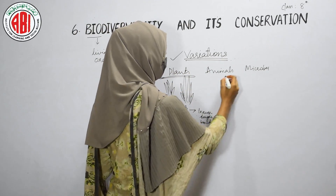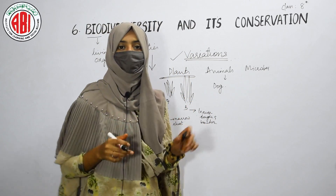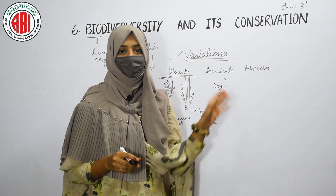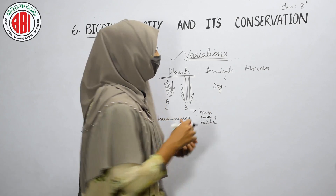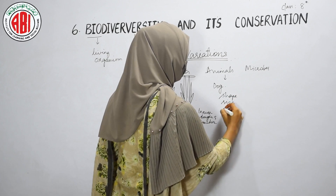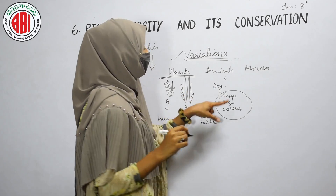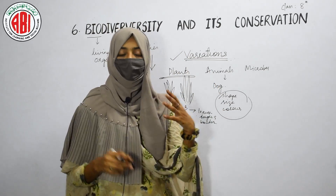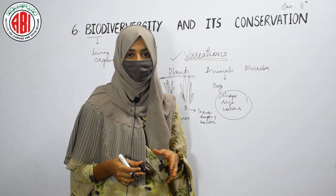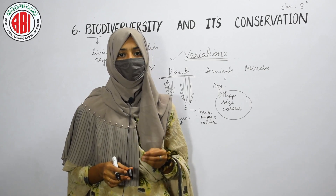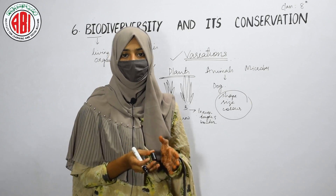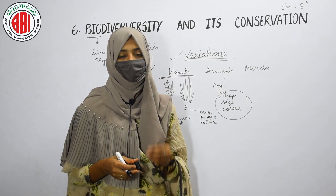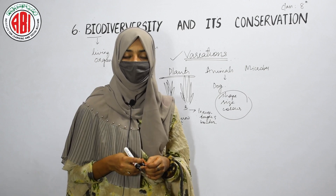Variations can be seen in plants, animals, and microorganisms. When you compare two dogs or two cats, you might see many similarities, but they may also differ in their shape, color, or size — these differences are referred to as variations. Similarly, students in a classroom may share some similarities like height or skin color, but they also show differences in their characteristic features.